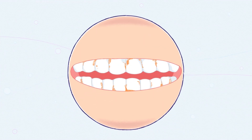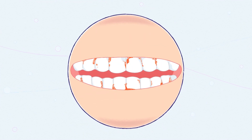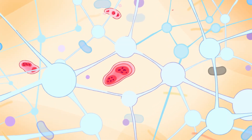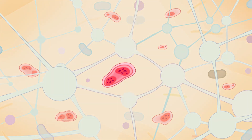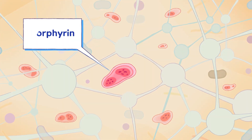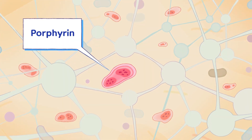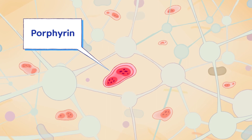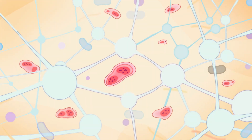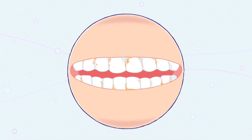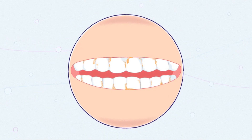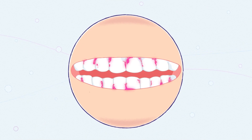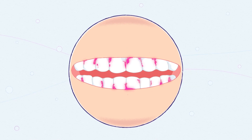What do the red-colored areas really mean? Porphyrin is a byproduct of metabolically active bacteria that build up in the biofilm on your teeth. Porphyrin lights up brightly red when illuminated with Q-Ray.